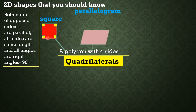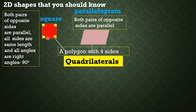Parallelogram. A parallelogram is a quadrilateral that has both pairs of opposite sides and they are parallel. A parallelogram has two pairs of parallel sides — one pair and another pair — so there are two pairs of opposite sides that are parallel.